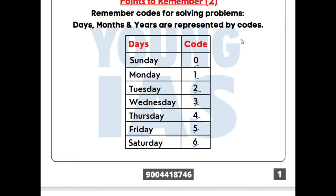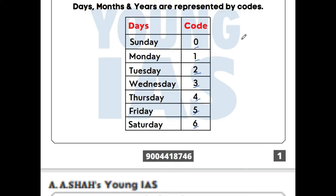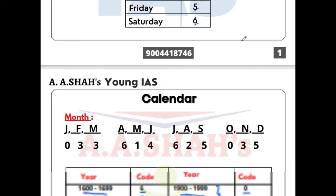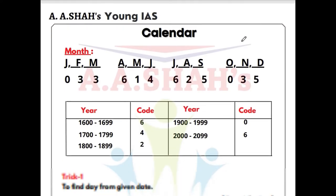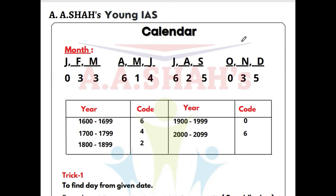So we have to remember these day codes. The days start from Sunday, so Sunday is 0, then Monday=1, Tuesday=2, Wednesday=3, Thursday=4, Friday=5, Saturday=6. Now let's proceed further to the codes for the months.